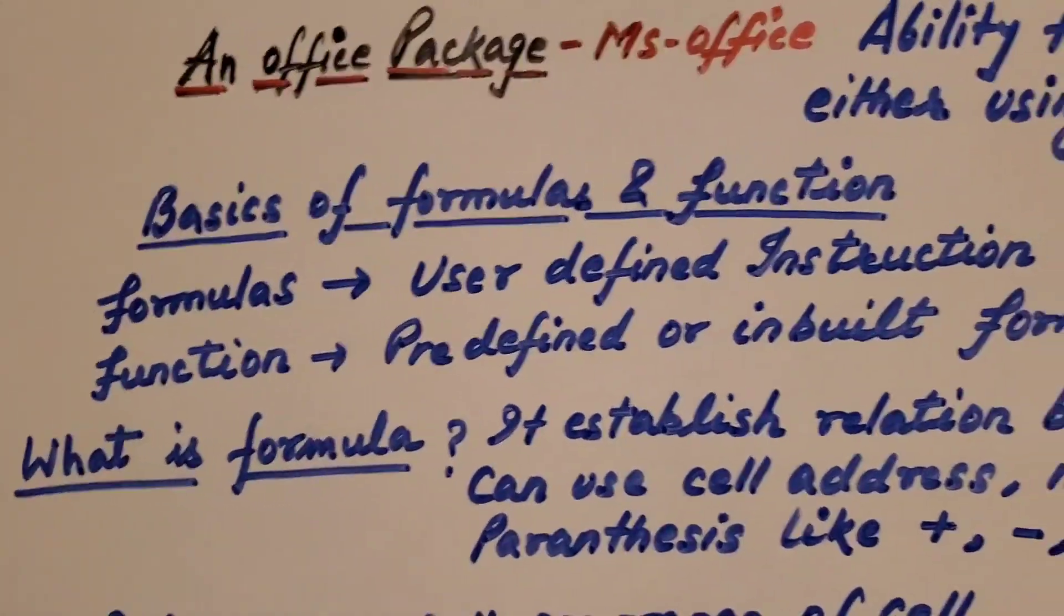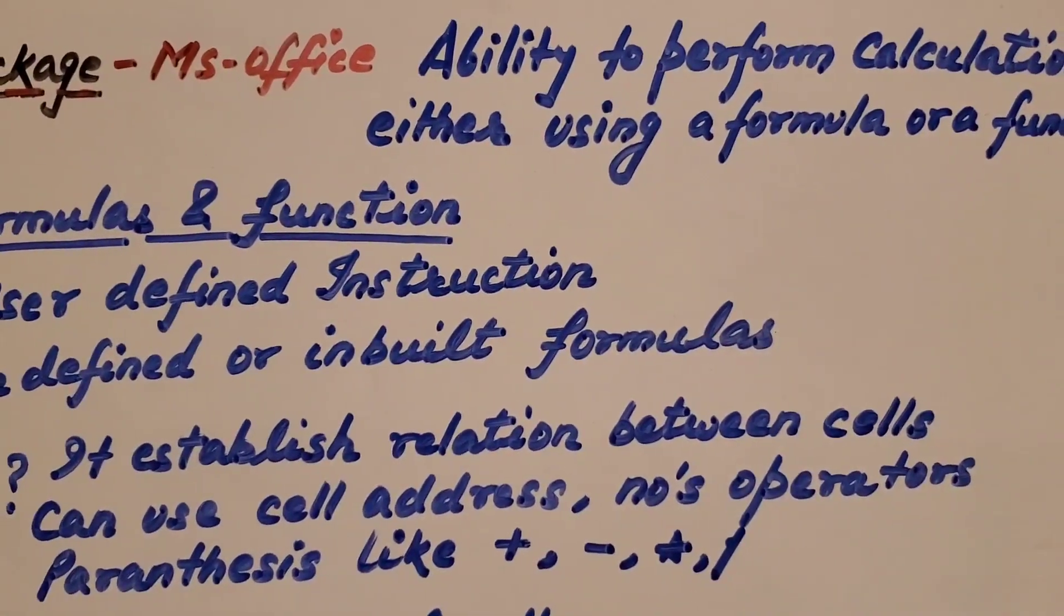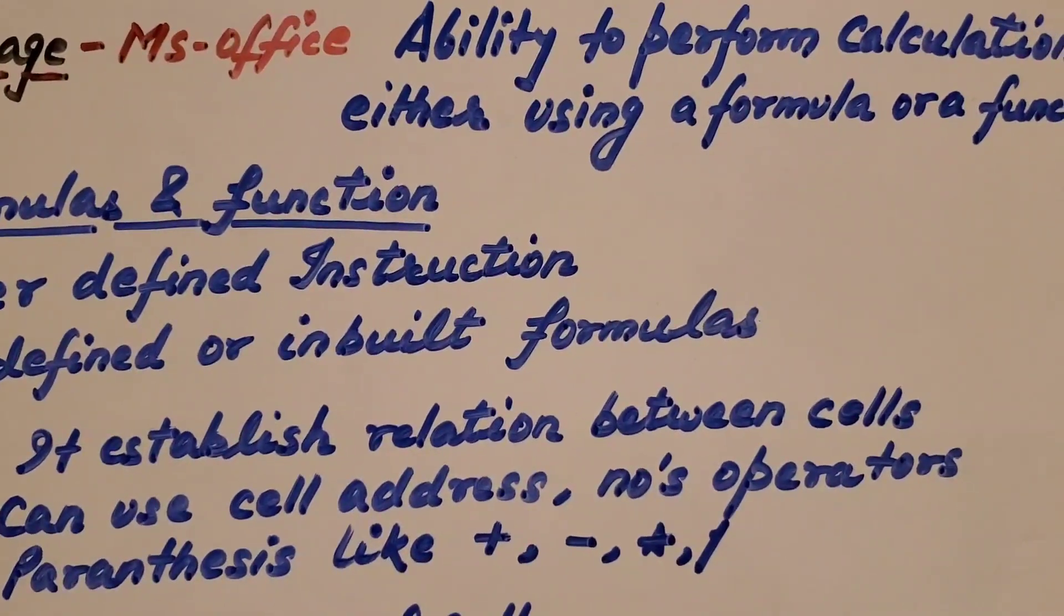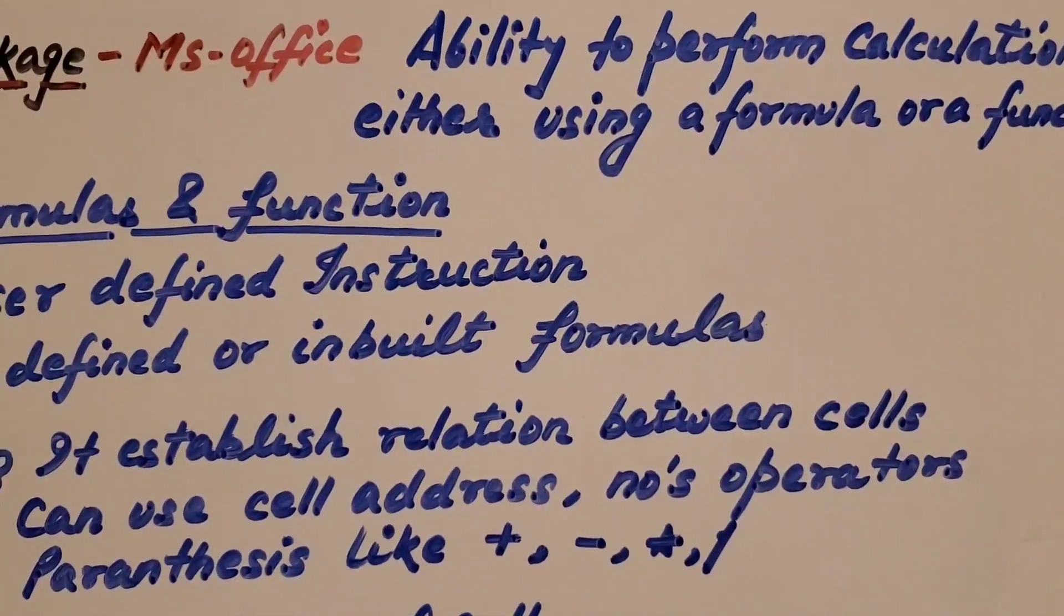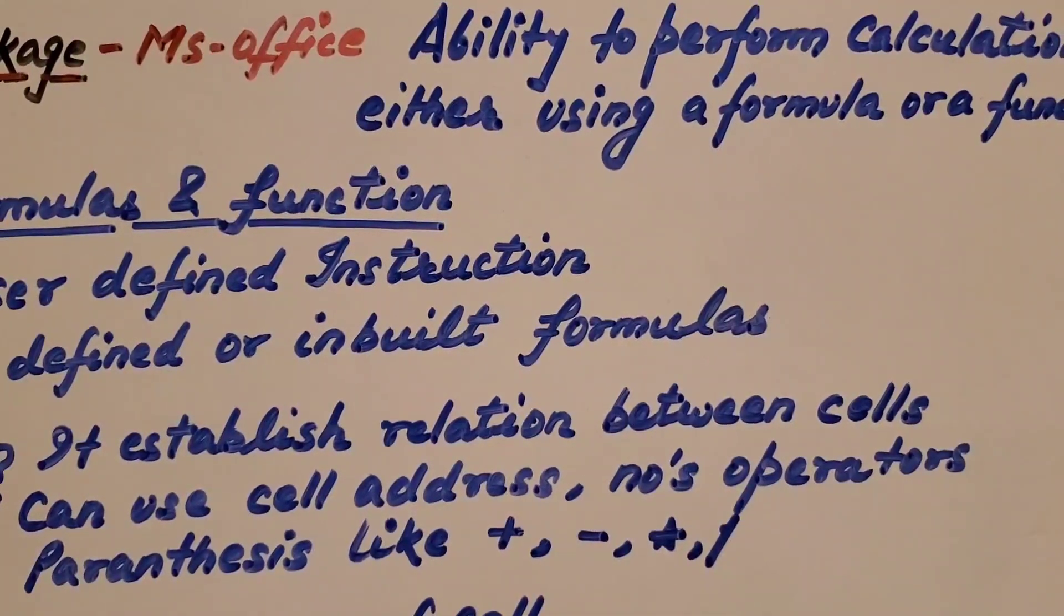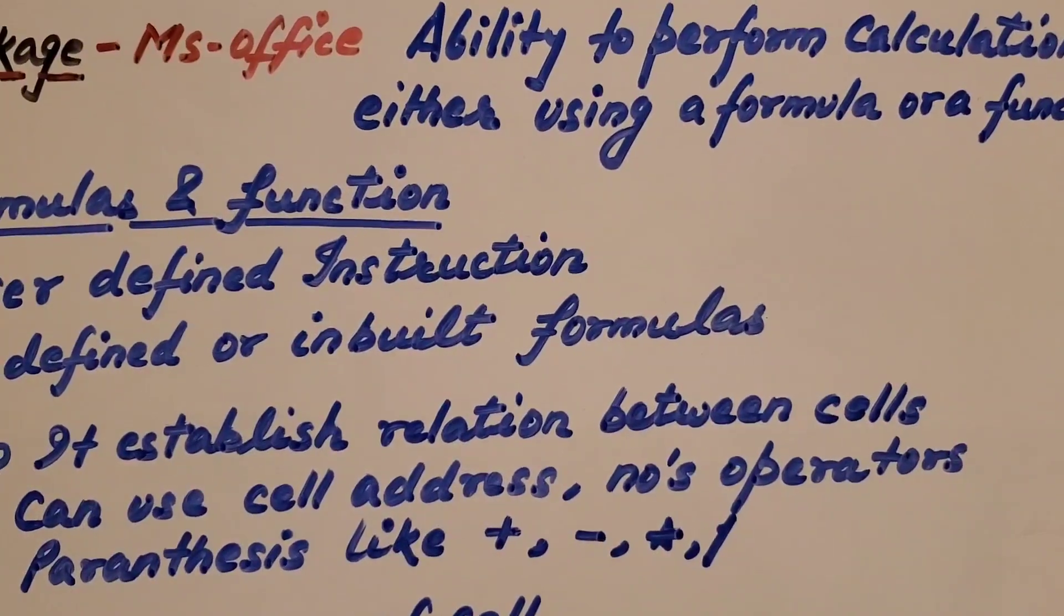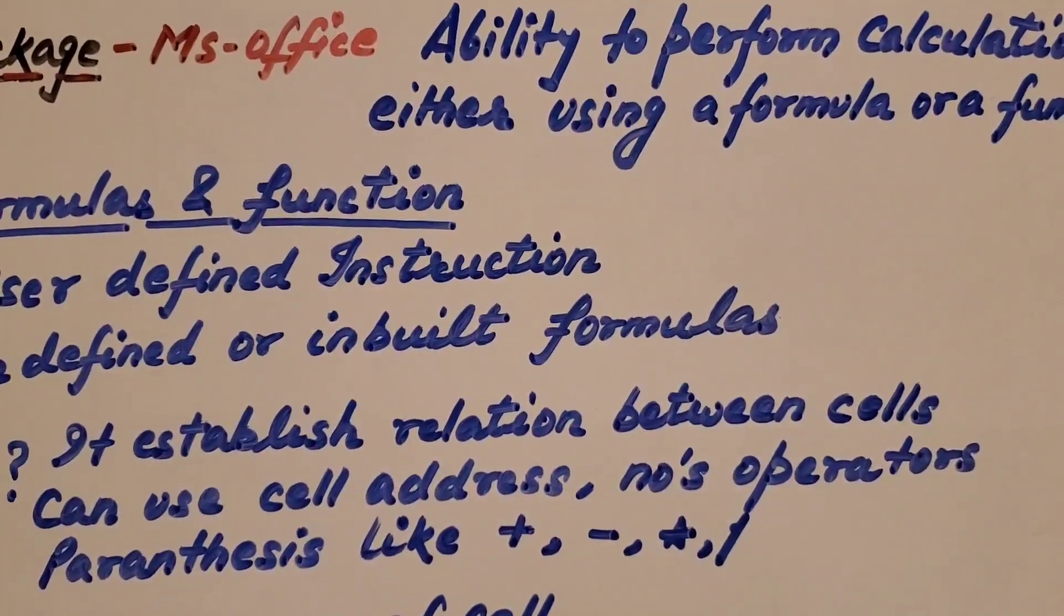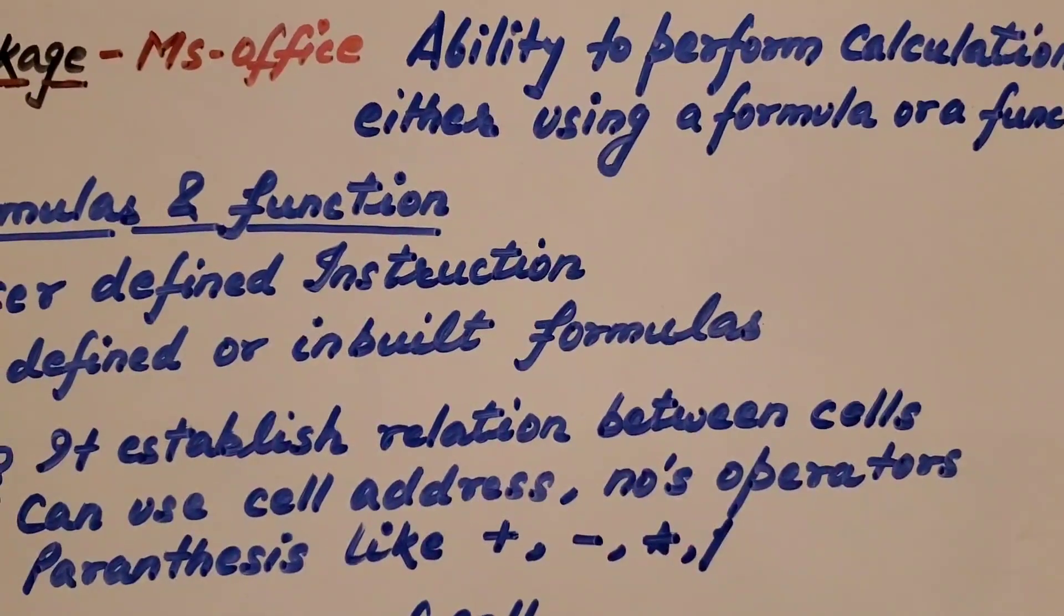Now, a major question comes, what is formula? Formula, it establishes relations between cells which can use cell address. Numbers, operators, parentheses, like plus, minus, asterisk and slash and many more. These are operators which we use. Any kind of symbol which we will use in the calculation, we call them operators. These all are called operator which creates a formula like A plus B. A and B, these two are variables and plus symbol is an operator.